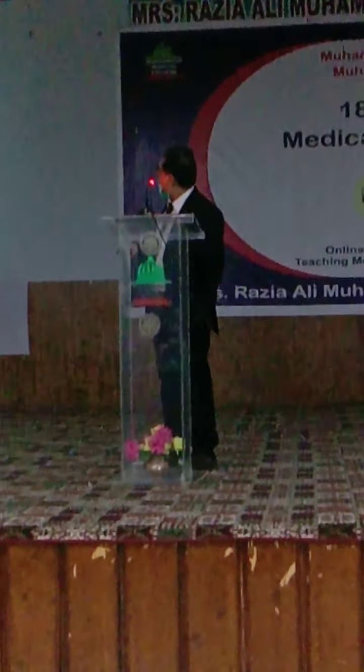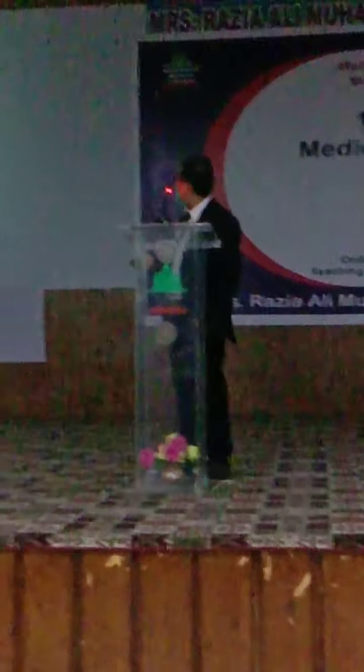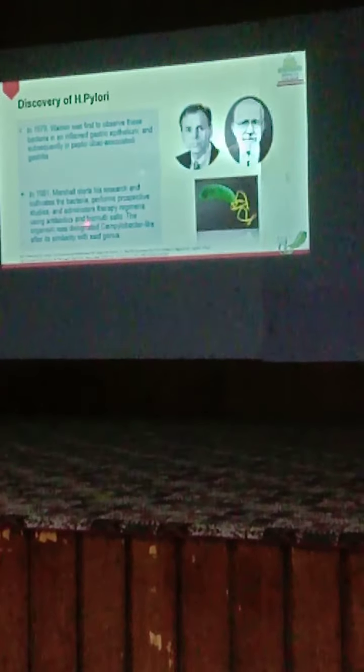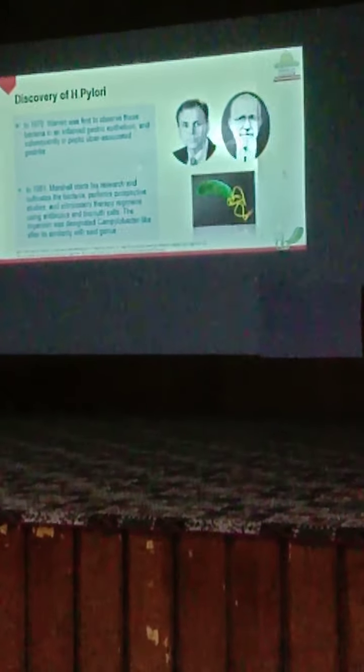Marshall consumed the bacteria, performed prospective studies, and administered a therapy regimen using antibiotics. The organism was originally designated as Campylobacter pylori, and is now called Helicobacter pylori. Warren and Marshall are credited with the discovery of Helicobacter pylori.